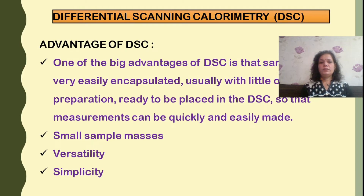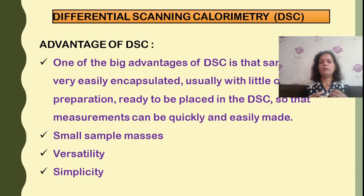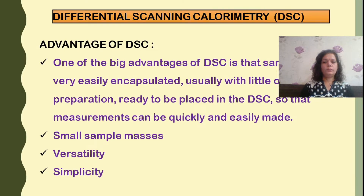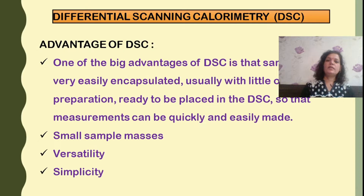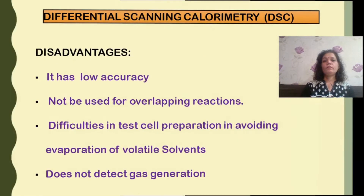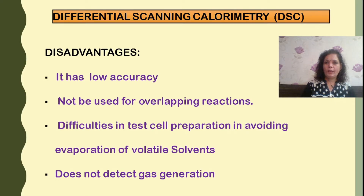There are various advantages of DSC. One big advantage is that the sample is easily encapsulated — no particular or definitive treatment is required, and the sample can be used as is. No major preparation is required, and the analysis can be done very quickly and easily. A small amount of sample is required, and the technique is versatile and simple to obtain results like enthalpy, transition temperature, melting point, and boiling point. Disadvantages include low accuracy, it cannot be used for overlapping reactions, difficulties in test cell preparation, difficulties in avoiding evaporation of volatile solvents, and it cannot detect gases released during the process.